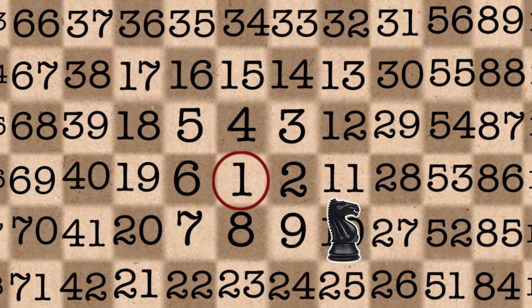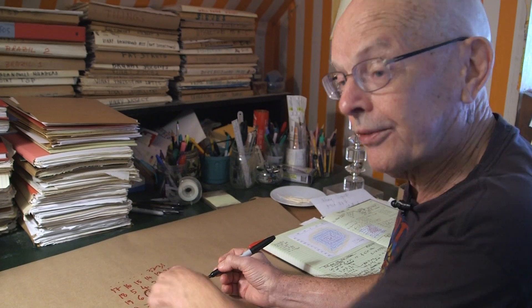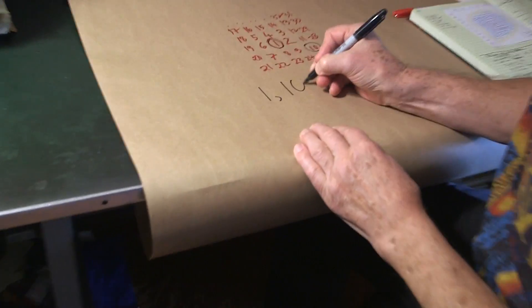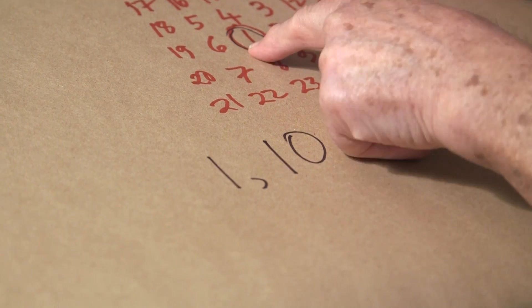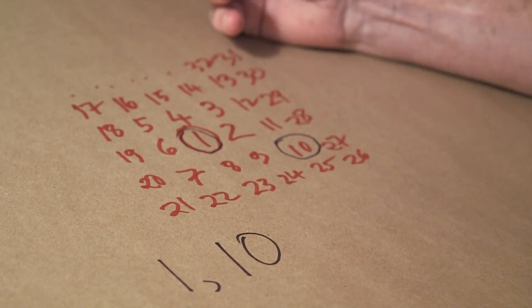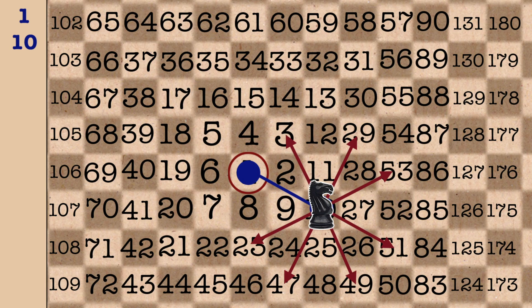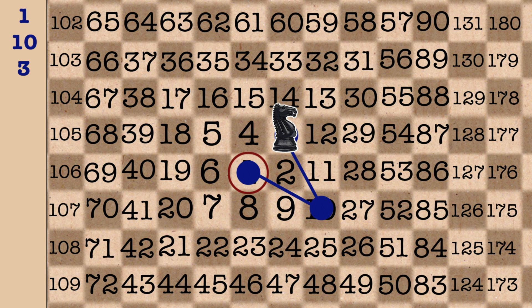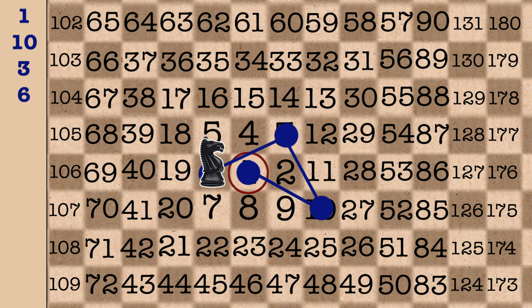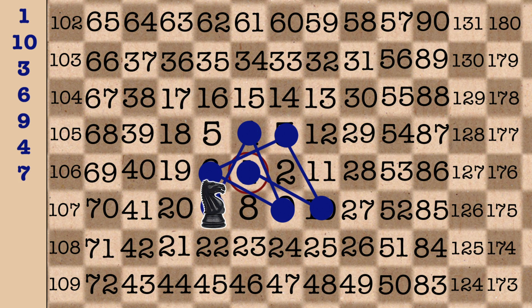So we're going to get a sequence — the sequence of the squares where the knight goes. It starts off at 1. Its first move is to the smallest number it can go to that it hasn't already been to, so it goes to 10. From 10, it can move back to 3, so the third term is 3. Then from 3 we go to 6, then 9, then 4. That's the sequence.